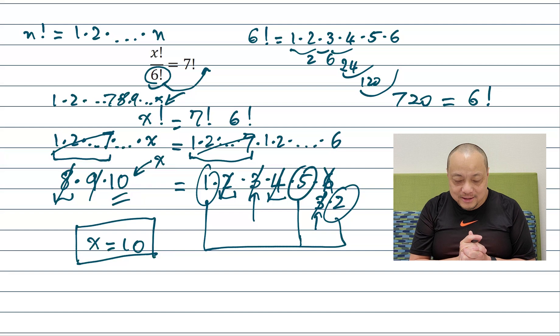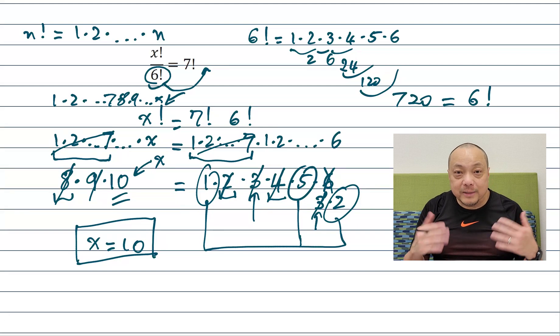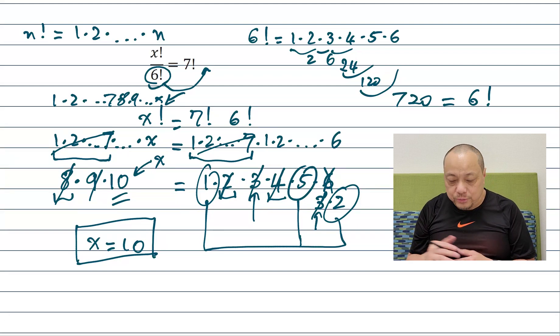Answer x equals 10. And if you actually plug this into a calculator you will find out that yes it is correct. 10 factorial divided by 6 factorial is equal to 7 factorial.